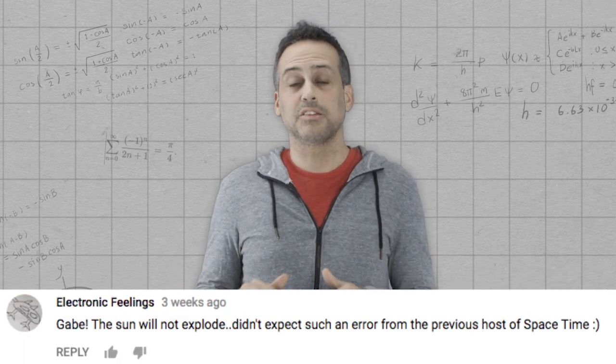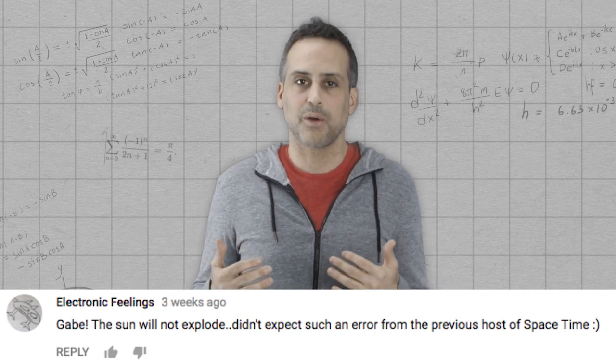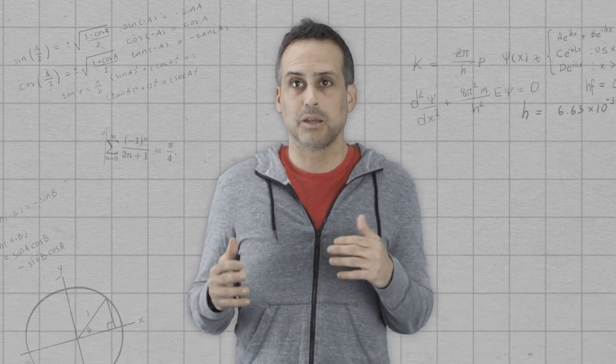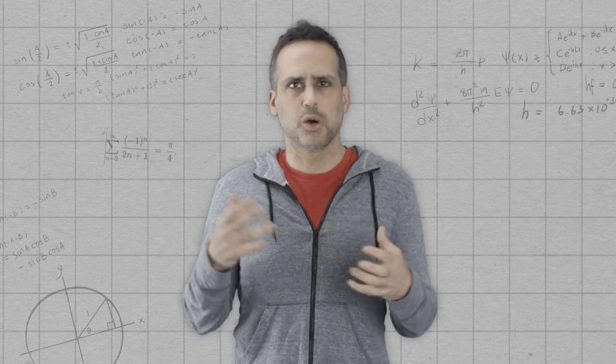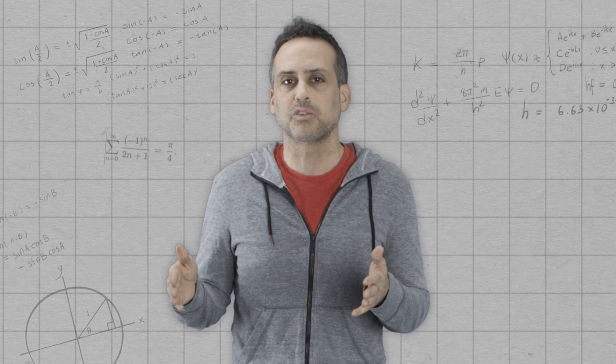Electronic Feelings pointed out that the sun is not actually going to explode and that I should know better than that. We should have caught it in the graphic. And that's true, but when we started typing, the sun will go into a red giant phase and eventually collapse into a white dwarf, we kind of ran out of screen space.